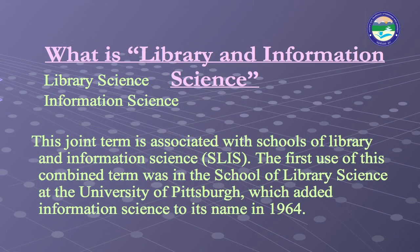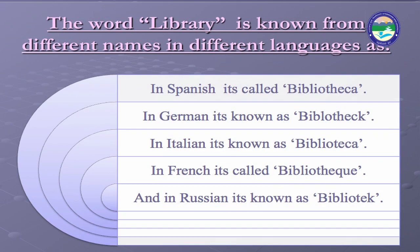This joint term is associated with schools of library and information science. The first use of this combined term was at the School of Library Science at the University of Pittsburgh, which added 'information science' to its name in 1964. The word library is known by different names in different languages: in Spanish it is called Bibliotheca, in German Bibliothek, in Italian Bibliotheca, in French Bibliothèque, and in Russian Bibliotheque.